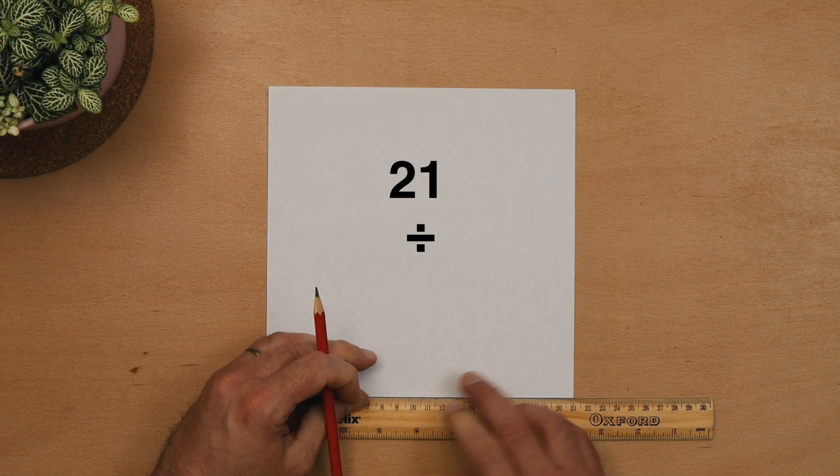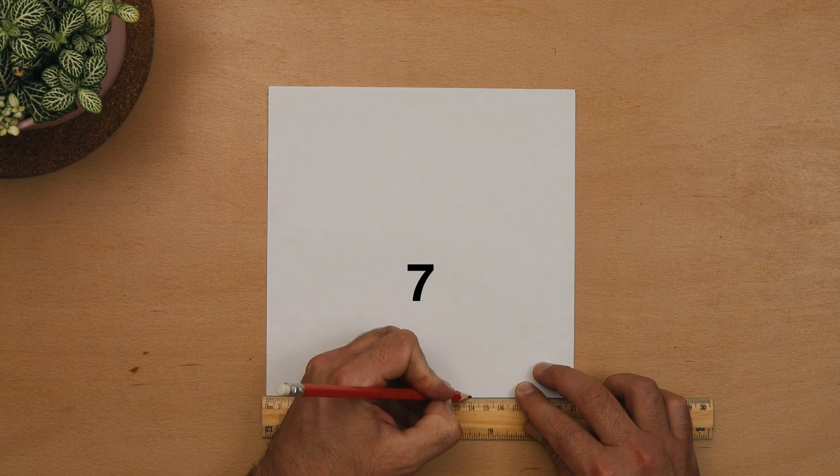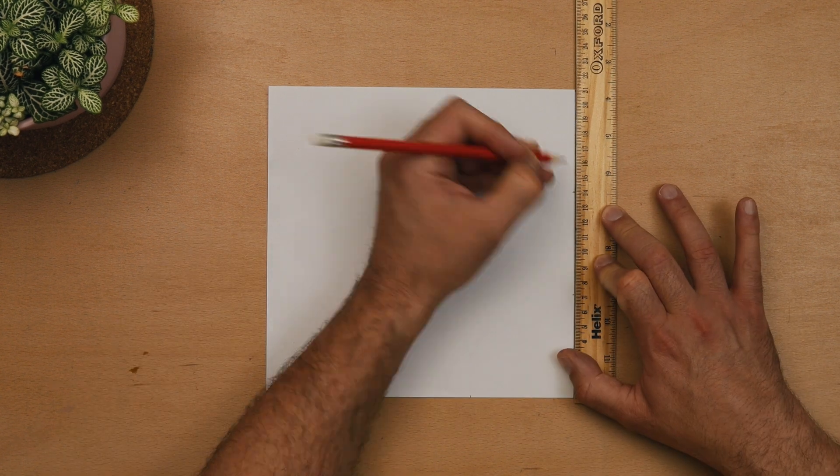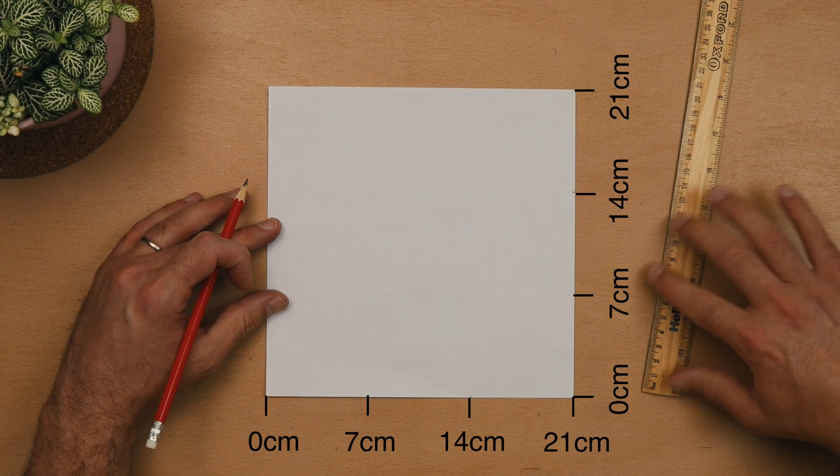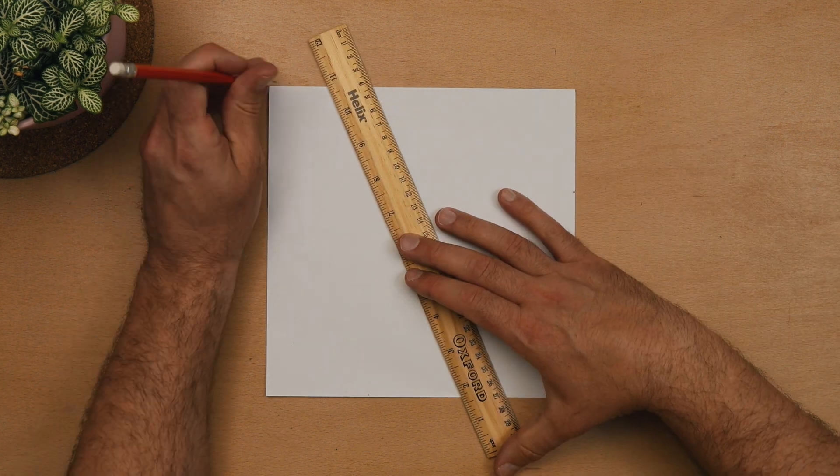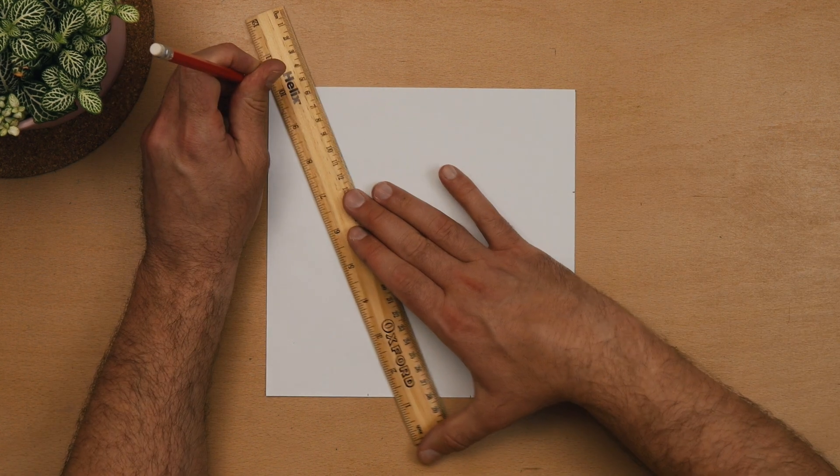Now we want to divide 21 by 3 to give us 7 centimeter markings along two of the sides. Now just choose the opposite corner and draw lines from there to the markings.